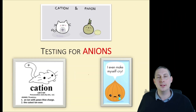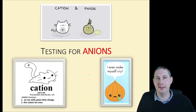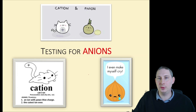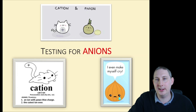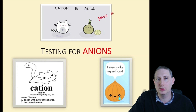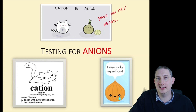Now on to the new material: testing for anions. Anions — like onions — are very negative; they make you cry. They're the negative bits of a salt.